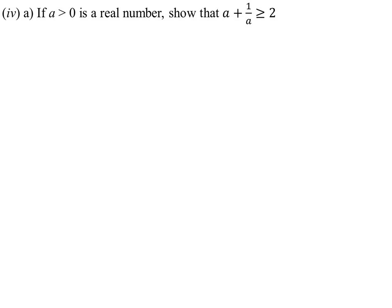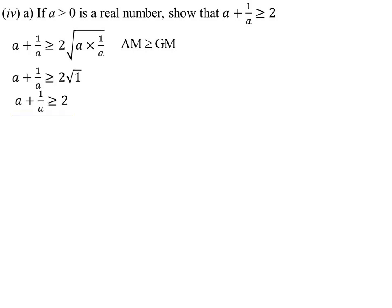If A is a positive real number, show that A plus 1/A is greater than or equal to 2. Two things added together are always ≥ 2 times the square root of those two things multiplied — arithmetic mean ≥ geometric mean. So A plus 1/A ≥ 2√(A · 1/A) = 2 immediately. Alternatively, starting from (√A minus 1/√A) squared ≥ 0, expanding gives A minus 2 plus 1/A ≥ 0, which rearranges to give the same result.